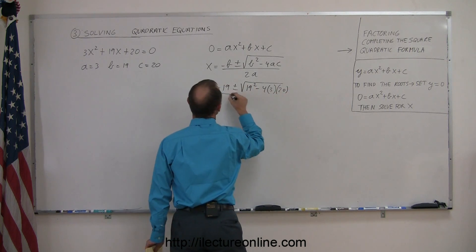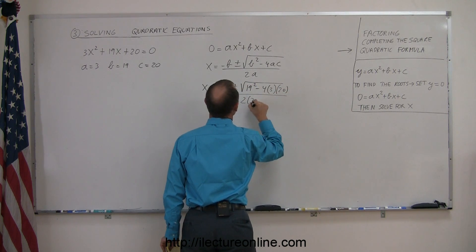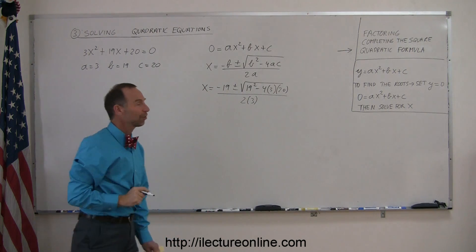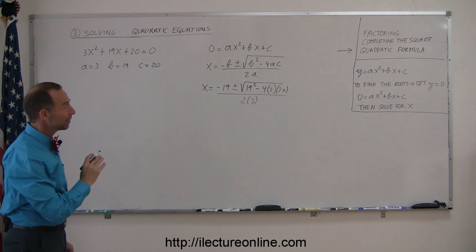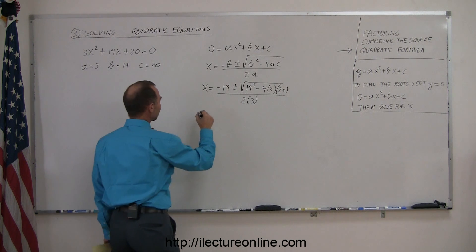And the whole thing divided by 2 times a, and again a is 3. So, there's a solution. Of course, we don't want to leave it in this form. We want to simplify it. So, let's go ahead and do that.